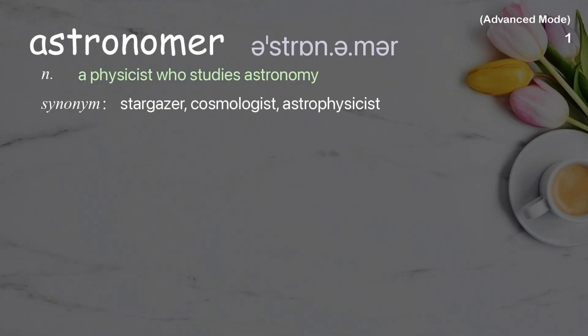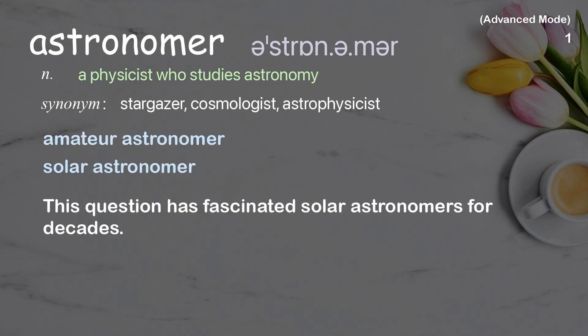Astronomer. A physicist who studies astronomy. Examples: amateur astronomer, solar astronomer. This question has fascinated solar astronomers for decades.